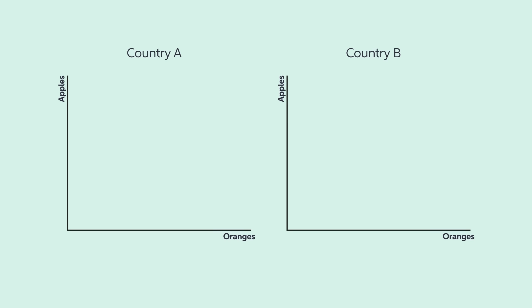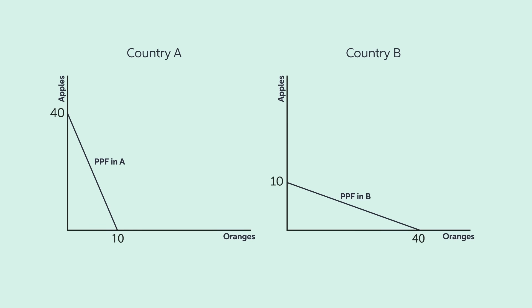If Country A were to grow only apples, it would produce 40 apples a day. If it specialized in oranges, it could only produce 10 oranges a day. For Country B, it is the other way around. Let's assume their production possibilities frontier is linear, as in these graphs.